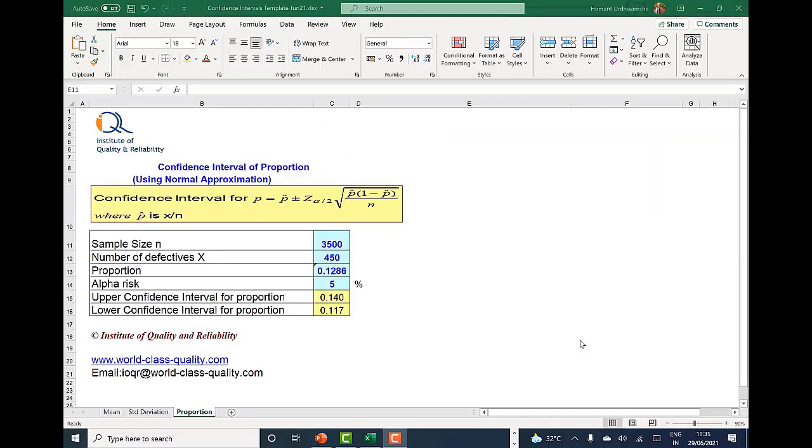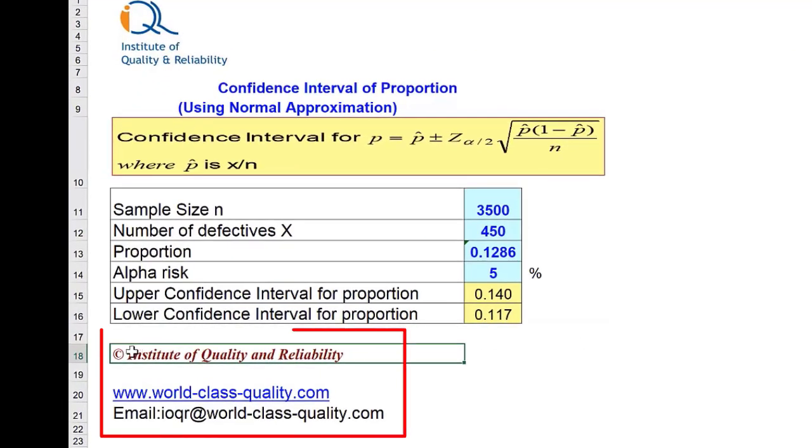We will now illustrate use of template created by Institute of Quality and Reliability. You can contact us by logging into this website www.world-class-quality.com and send a mail by clicking on contact us. Alternatively, the email ID is already mentioned here. You can write to us on this email to get this template.